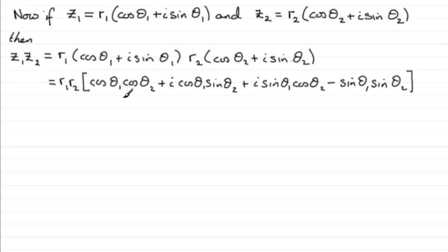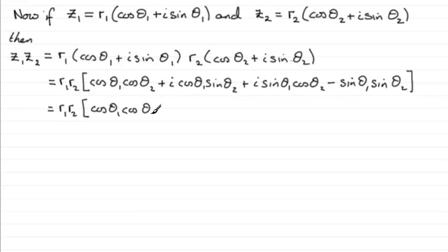Now grouping the real parts and the imaginary parts, we have R1 R2 times, with the real part being cos theta 1 cos theta 2 minus sine theta 1 sine theta 2, and then the imaginary parts — pulling out i as a common factor — we get i times the remaining terms.